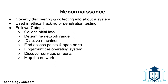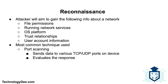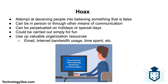Next we have reconnaissance. In the context of cybersecurity, reconnaissance is the practice of covertly discovering and collecting information about a system. This method is often used in ethical hacking or penetration testing. Reconnaissance generally follows seven steps: collect initial data; determine the network range; identify active machines; find access points and open ports; fingerprint the operating system; discover services on ports; and map the network. Using these steps, an attacker aims to gather information about file permissions, running network services, operating system platforms, trust relationships, and user account information. One of the most common techniques is port scanning, which sends data to various TCP and UDP ports on a device and evaluates the response.